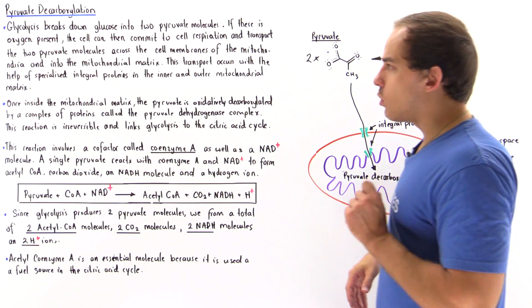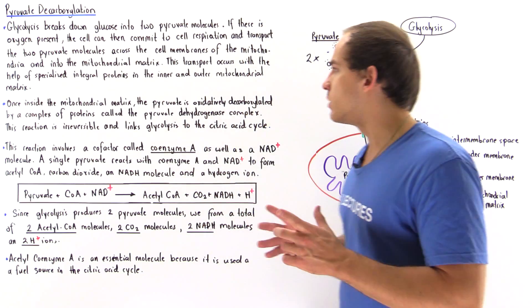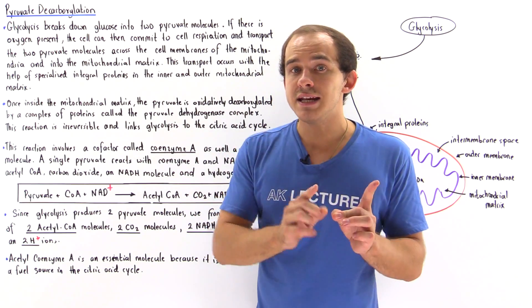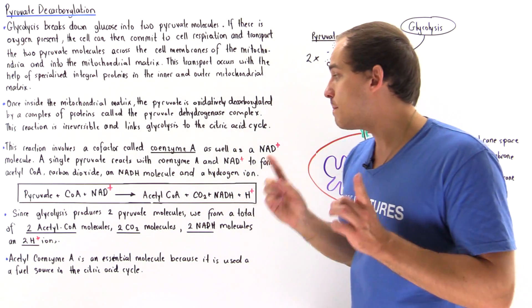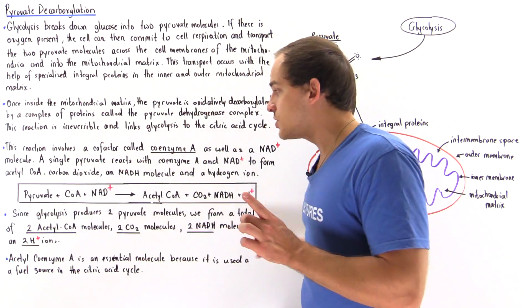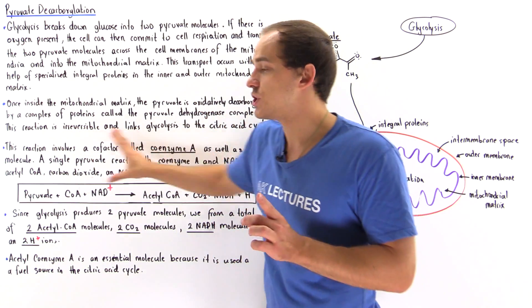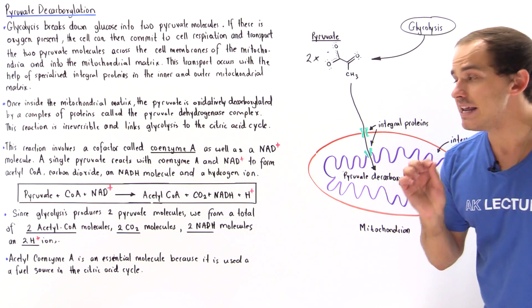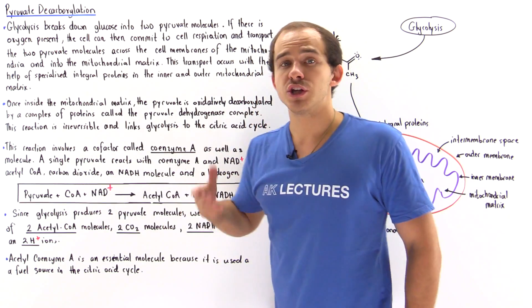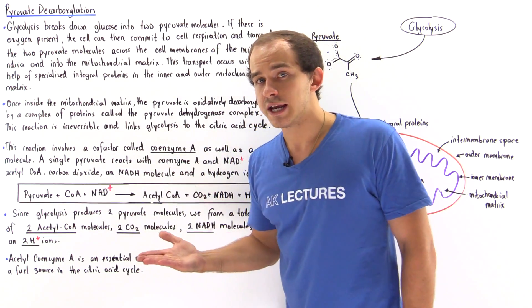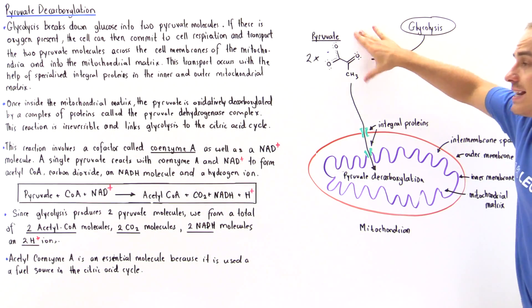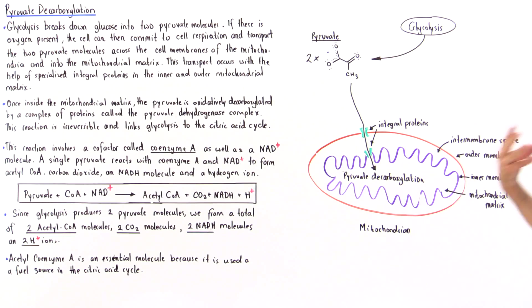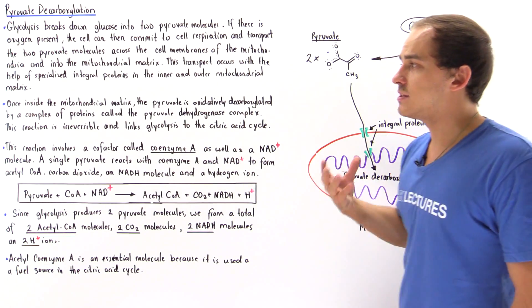One last point I want to emphasize: pyruvate decarboxylation does not actually need oxygen to take place, meaning there's no oxygen in the reactant or product portion. But even though this reaction doesn't use oxygen directly, the pyruvate is only transported into the mitochondrial matrix if there is oxygen present in the cell.